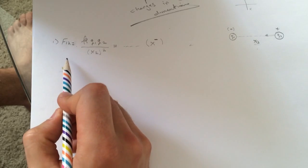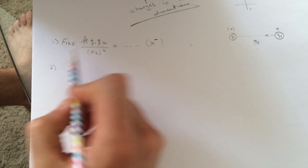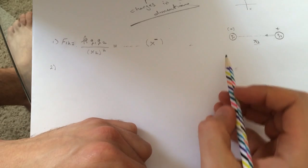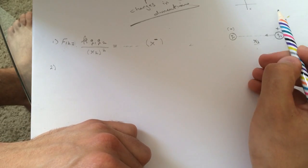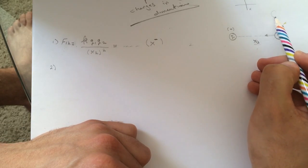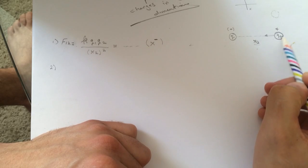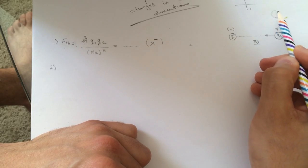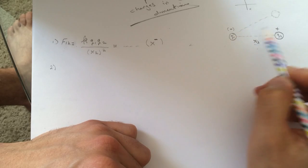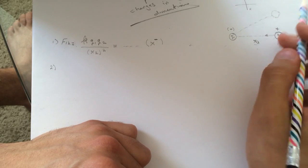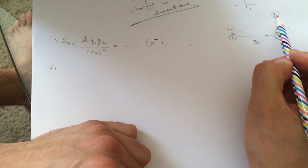Alright so question number two is they got a charge that is they moved q2 and moved it up here. So now this is the distance between them. Now this guy is not here, q2 is higher now. So q2 is here.